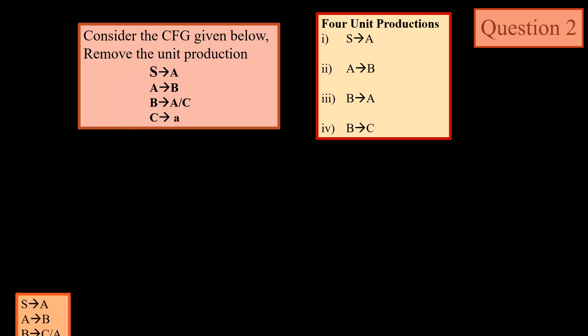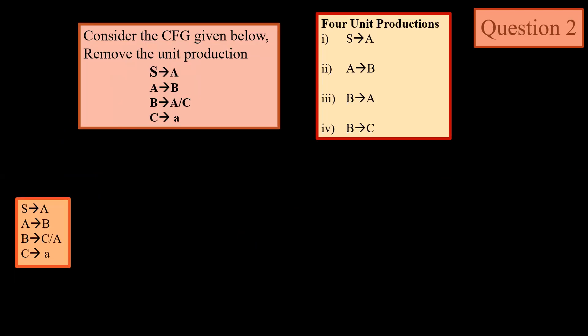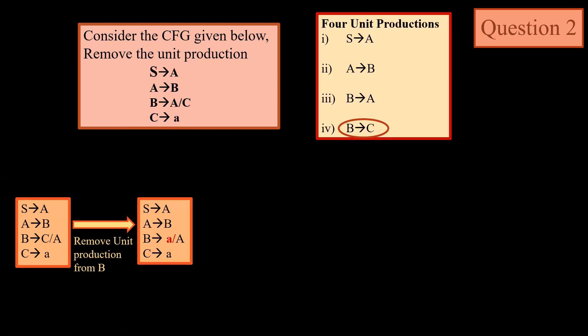The next question says: remove the unit productions from the grammar given below. Now we have four unit productions: first is S → A, second is A → B, third is B → A, and fourth is B → C. Starting with the initial grammar, first we remove B → C. We remove this unit production from B, and the output is: corresponding to B → C, we write B → a | A.